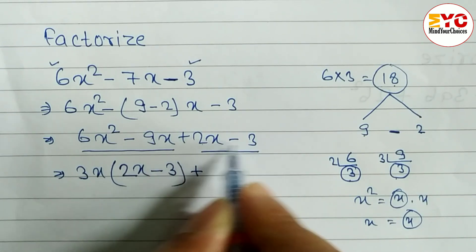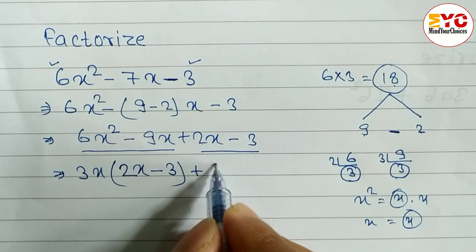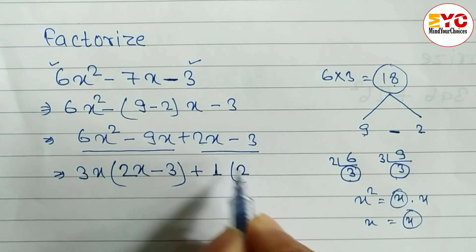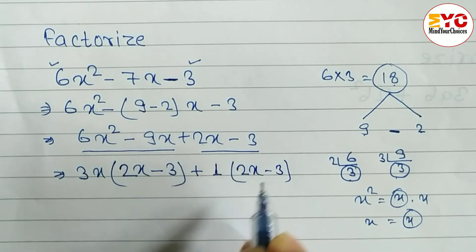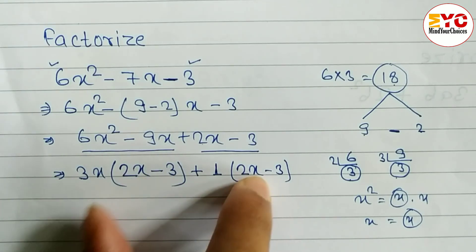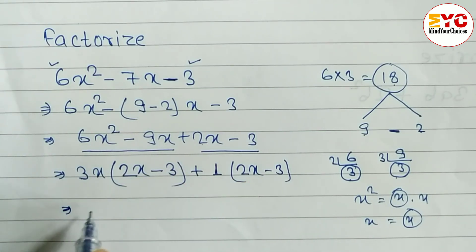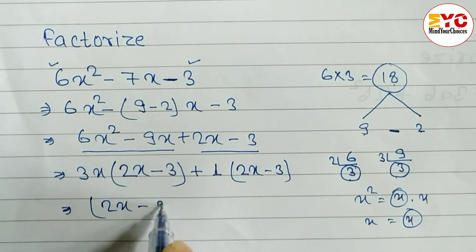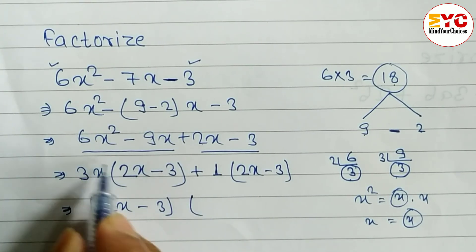Now you can see here, what we can take common? 2x - 3. What is the common? Nothing is common here, so we have to write 1 and same 2x - 3. One thing you have to keep in mind: if it is 2x - 3 here, also we get 2x - 3. Both should be same. Now let's take common: 2x - 3 is common, and what is remaining? 3x + 1.